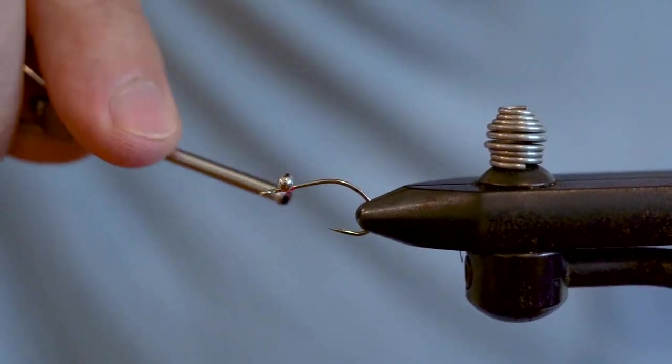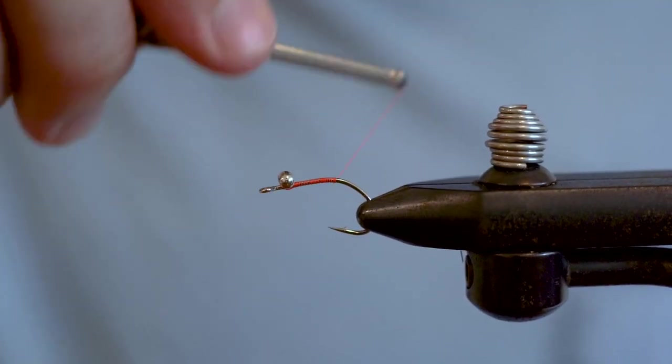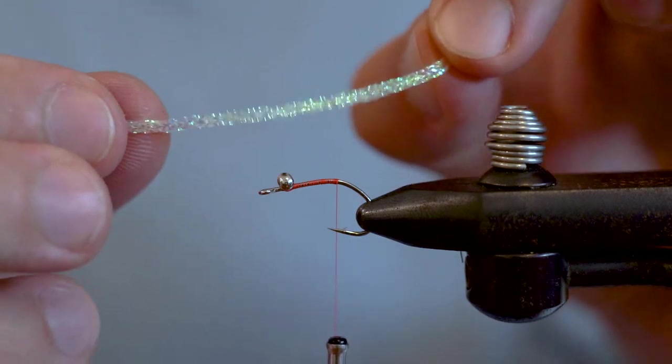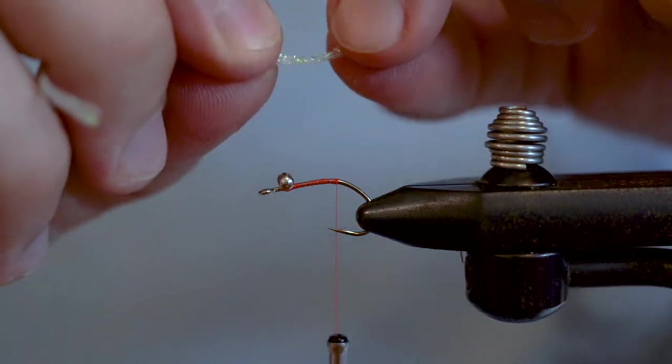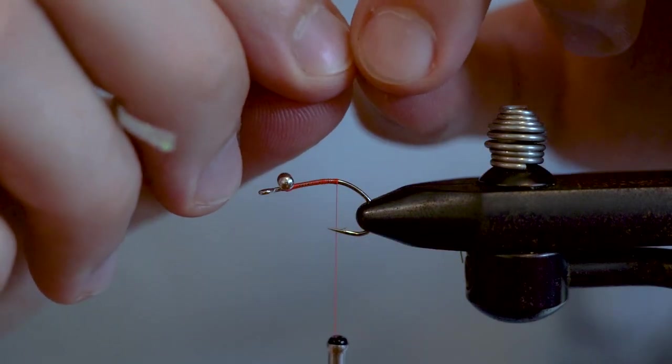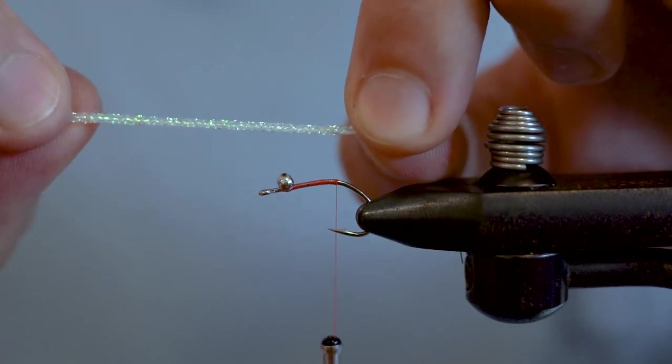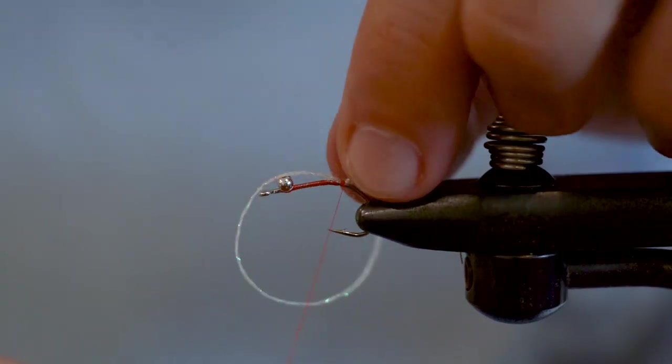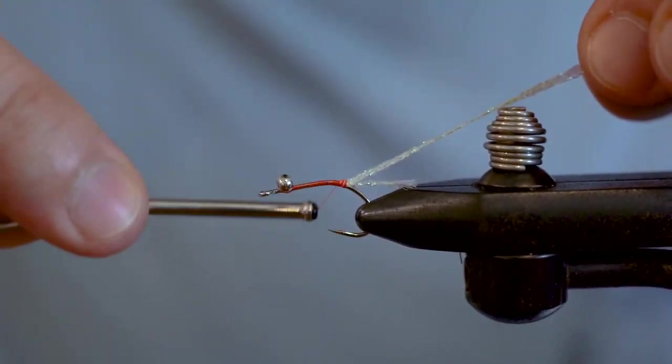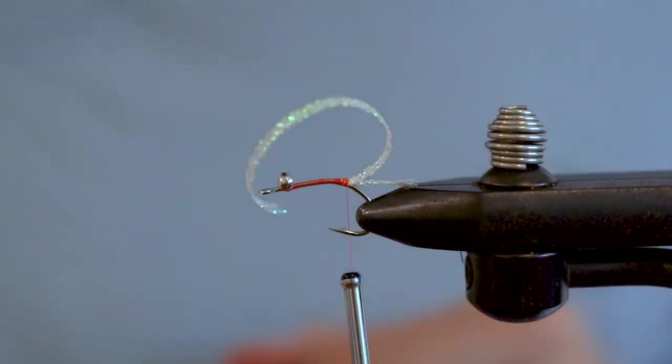Now work your thread all the way back to where the bend in the hook begins. The body and tail of the gotcha shrimp uses this diamond braid. You want to start out by adding in a longer tag to become the tail but making sure to include plenty of extra so that you can create the body. Tie in your tail and then bring the body section back and overlap it. This is going to make sure that you have a smooth transition.